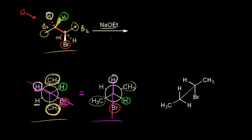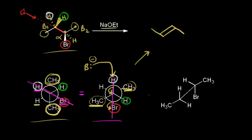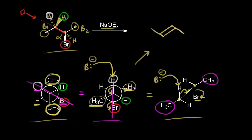In our E2 mechanism, our strong base — the ethoxide anion — takes this beta proton. These electrons move in, these electrons come off onto our leaving group, and when the double bond forms, the two methyl groups end up on opposite sides of the double bond. So this gives us our trans product. From the sawhorse projection, this is the same conformation — our alpha carbon has the bromine, our strong base takes the beta proton, and the electrons move in to form the double bond as the bromine leaves. This concerted mechanism gives us the trans product, with the two methyl groups on opposite sides.